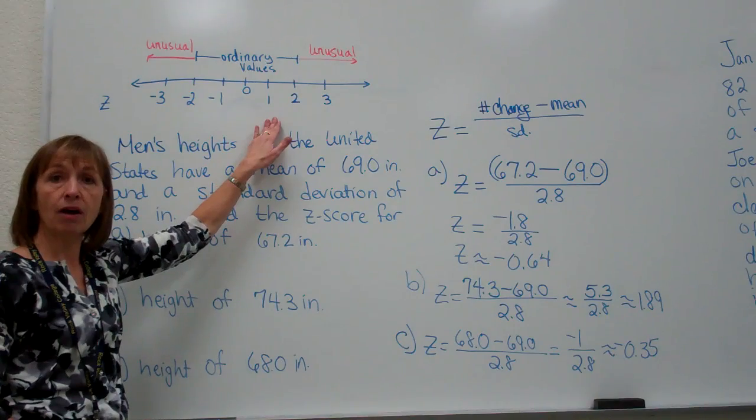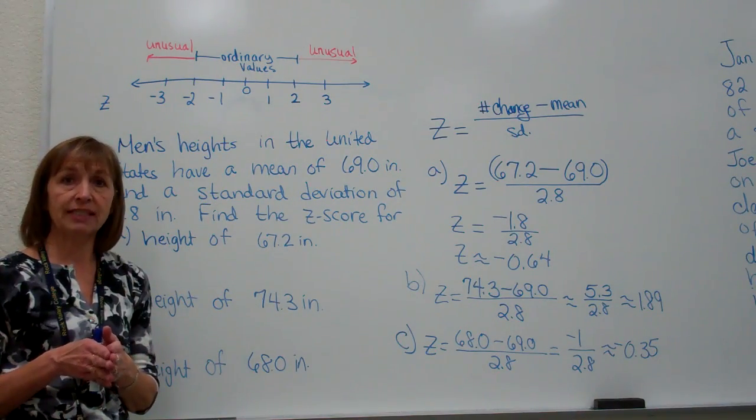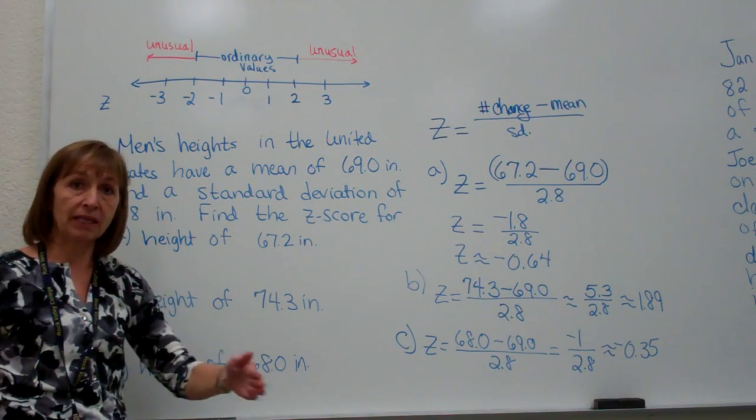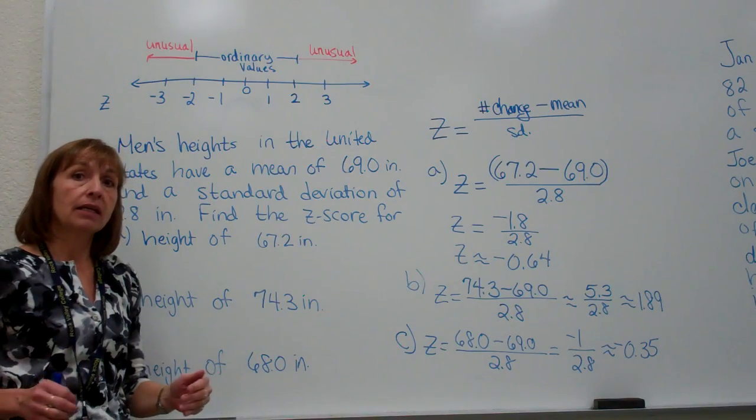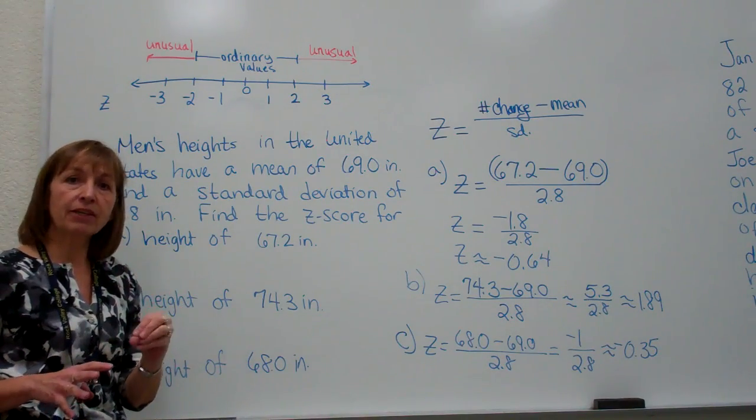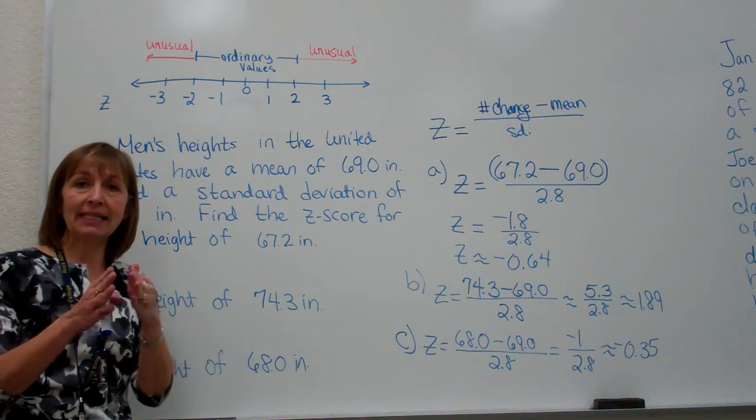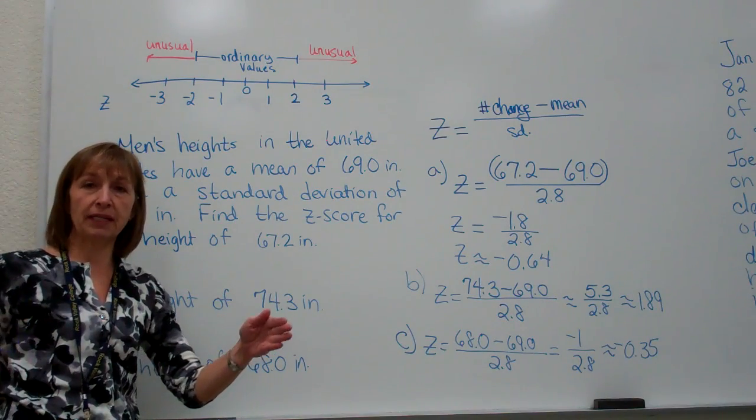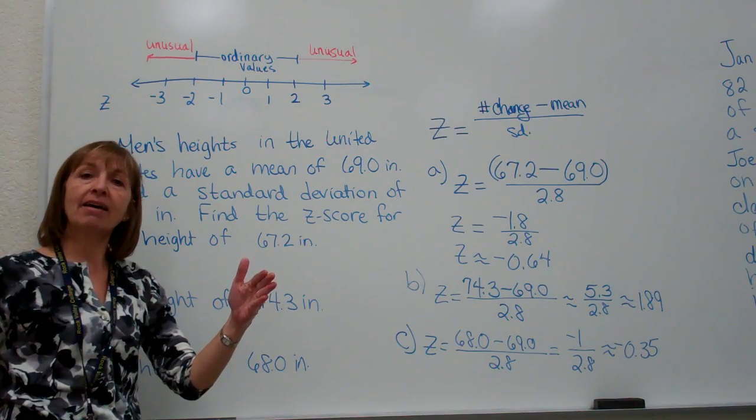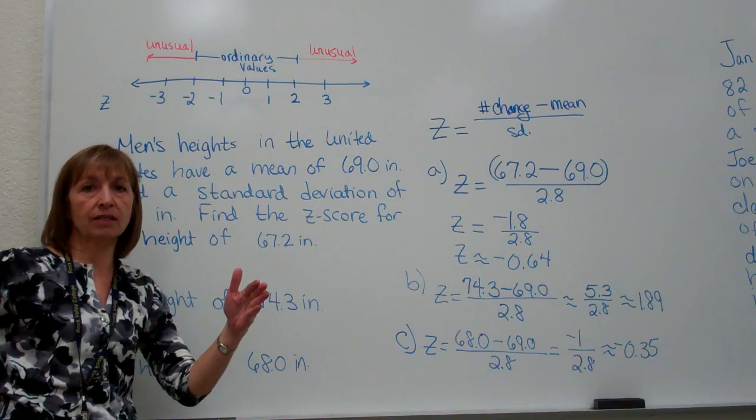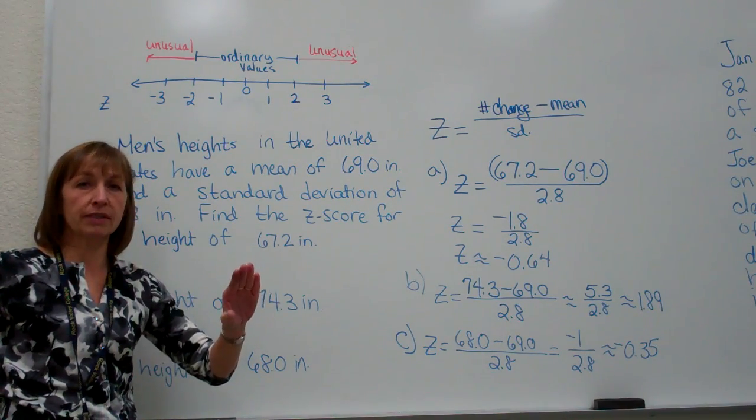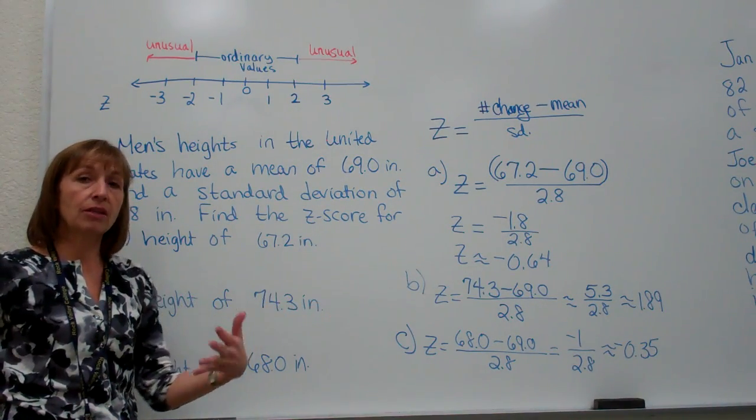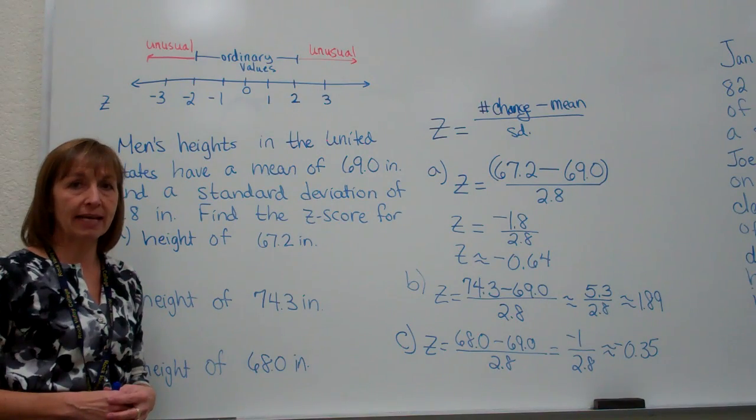Our z-scores are the number of standard deviations and direction away from the mean that our data values are. If I have just ordinary values out of my data set, I should be getting z-scores that are somewhere between negative 2 and positive 2. And if I have values that give me a z-score that's smaller than negative 2, or bigger than 2, then those are unusual values from my data set.